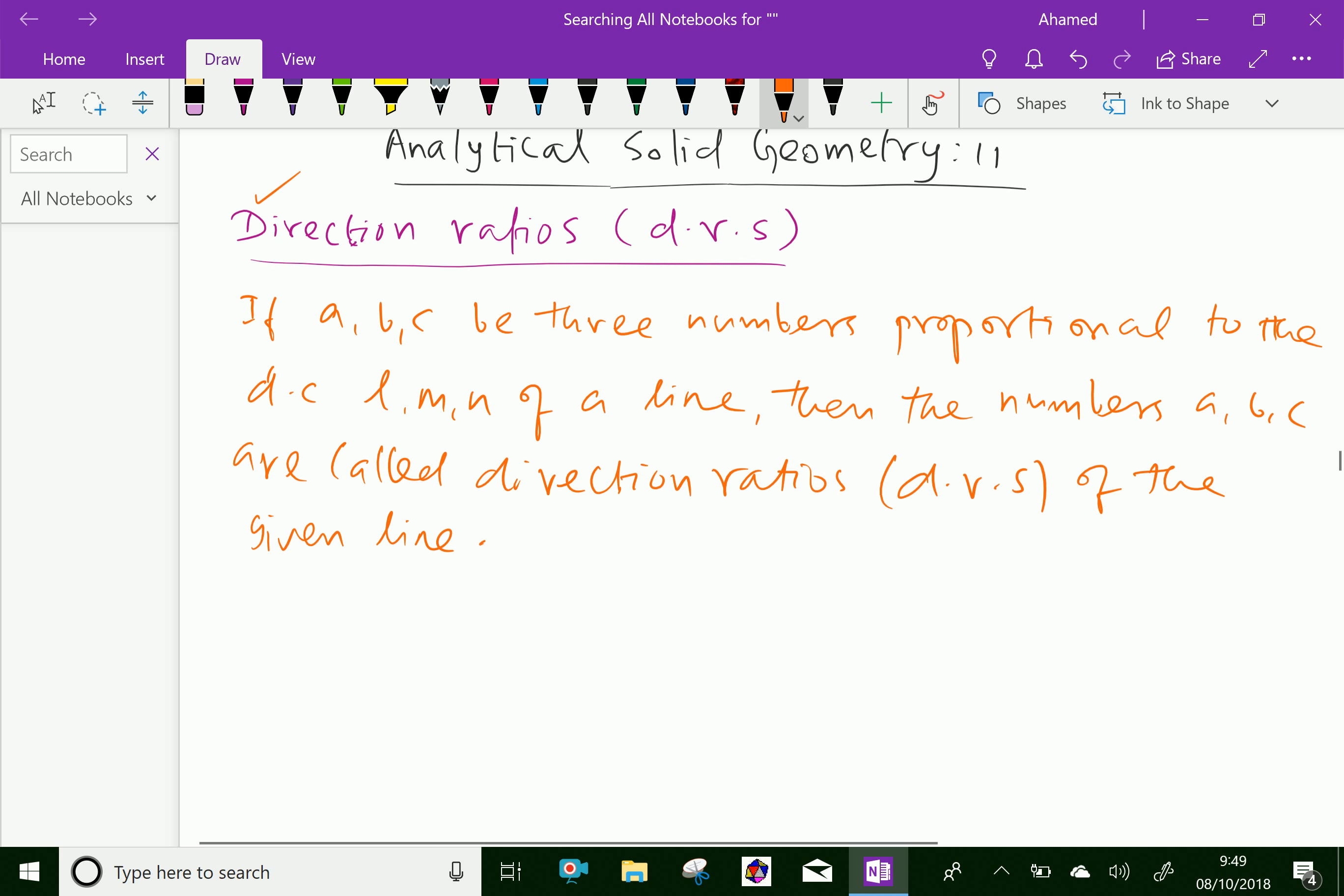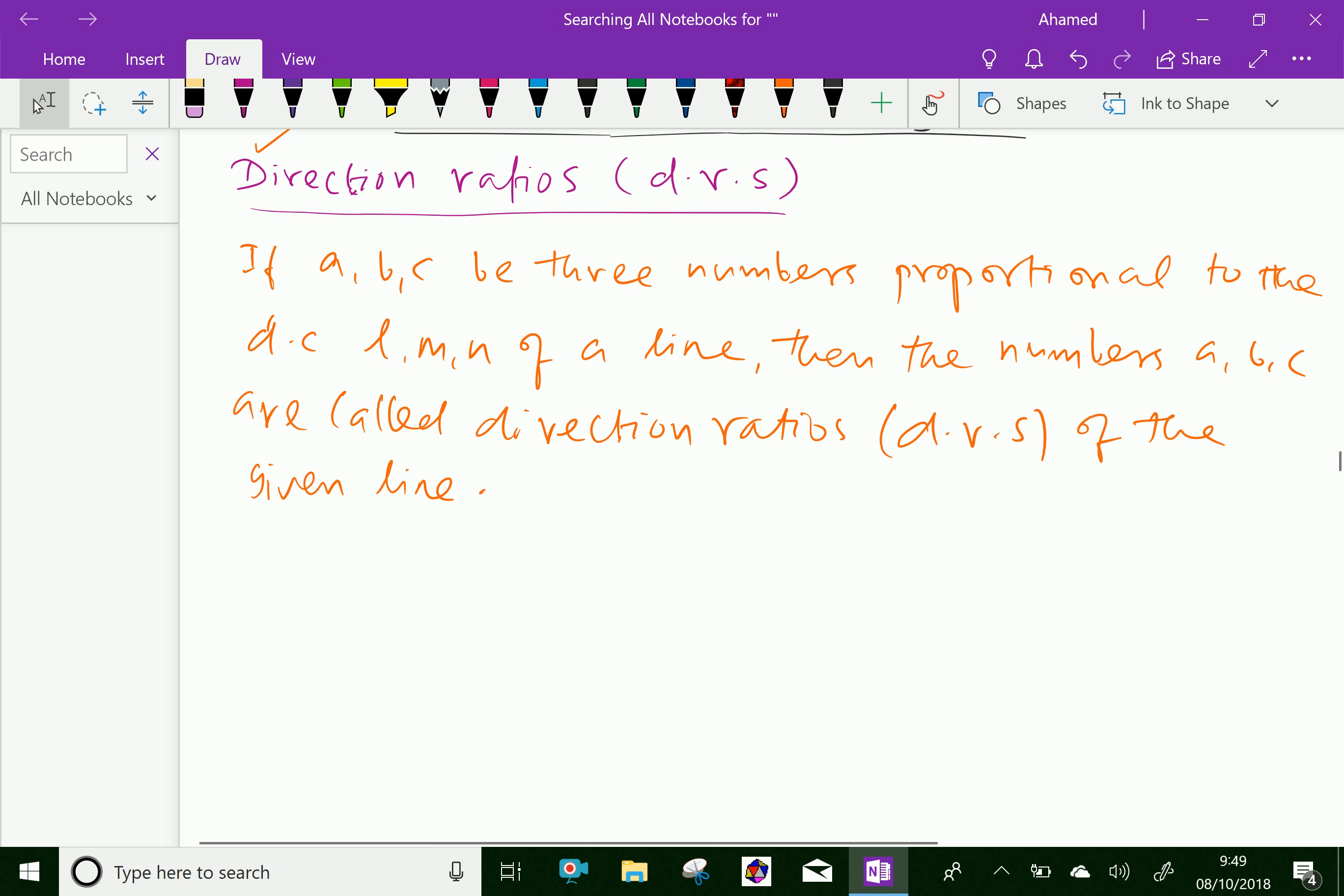Then the numbers A, B, C are called direction ratios of the given line.